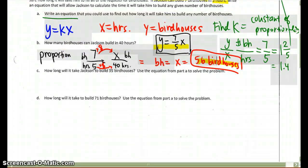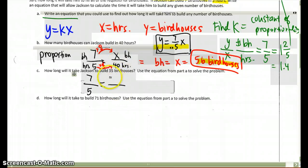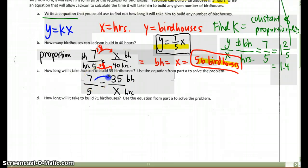Let's see how long will it take Jackson to build 35 houses. Again, we can set up a proportion. Keep the 7 birdhouses in 5 hours, make that equal to 35 birdhouses, and I'm looking for x number of hours. We see a nice relationship from 7 to 35, which is if I multiply it by 5, I get 35. And 5 times 5 would then mean that the number of hours it's going to take me is 25 hours.